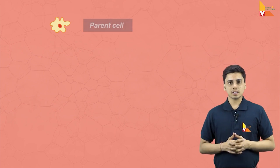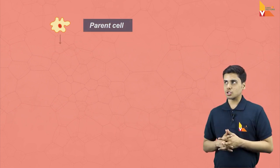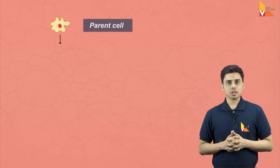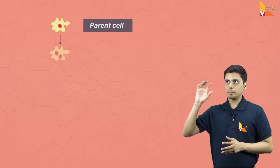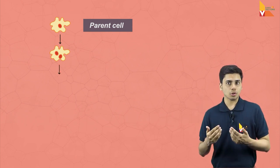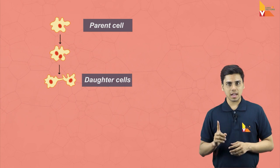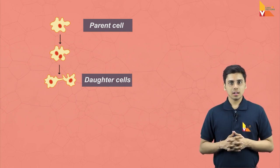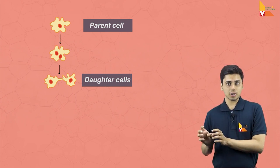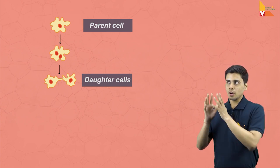Let us consider an example here. You can see a parent cell. When this parent cell undergoes division, it forms two daughter cells. As you can see here, the parent cell is dividing and two new daughter cells are getting formed. This covers the first important property of the cell — its ability to divide.